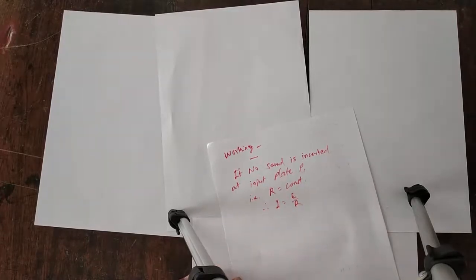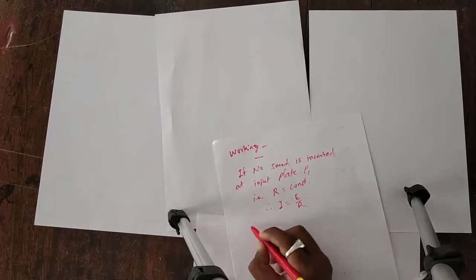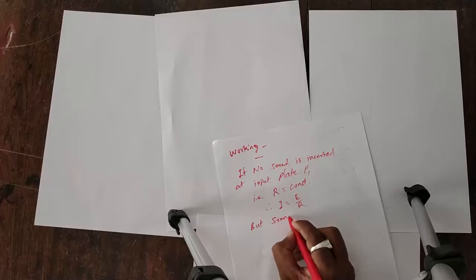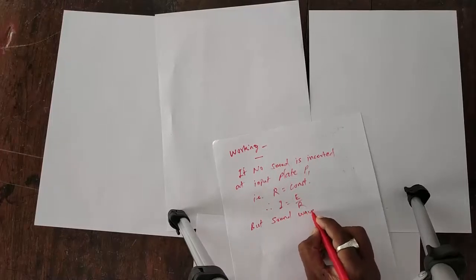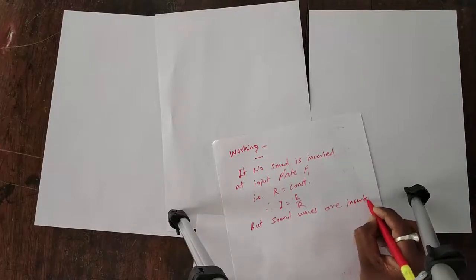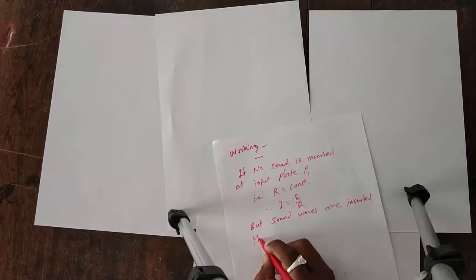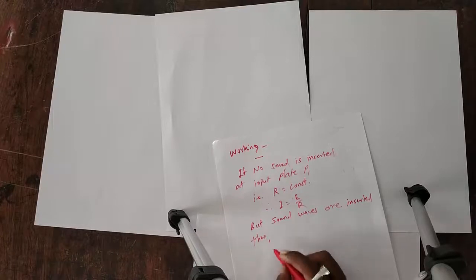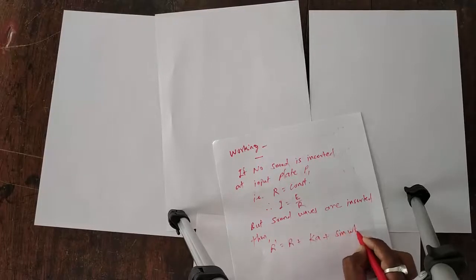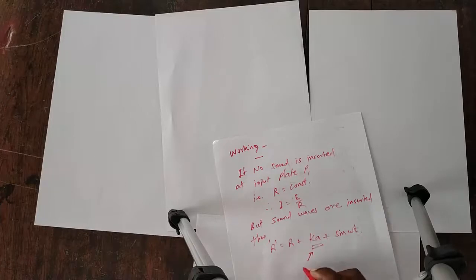But if the sound waves are inserted on the plate P1, then the resistance becomes R prime, that is, initial resistance capital R plus KA plus K sin omega t, where KA is the amplitude of the vibration.